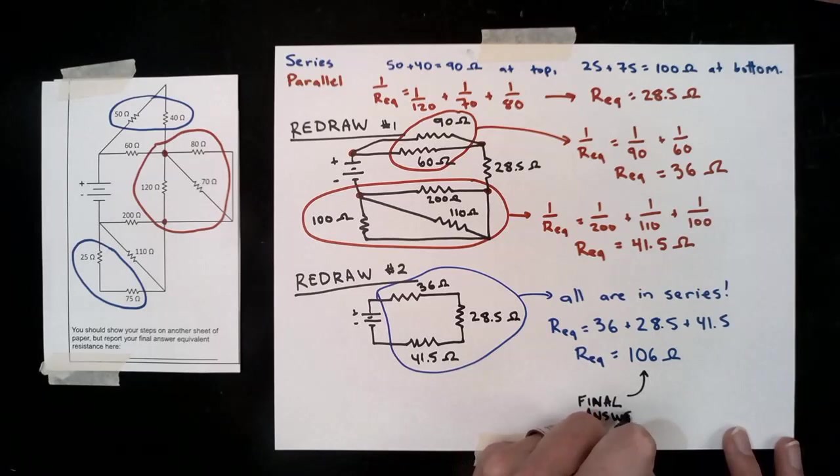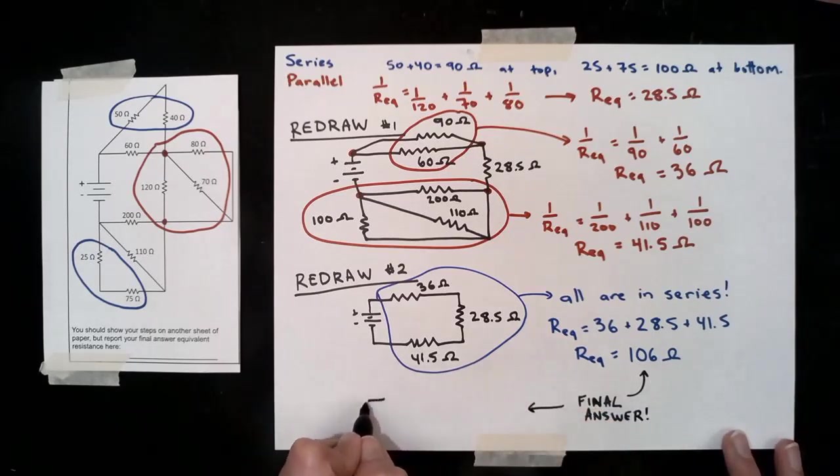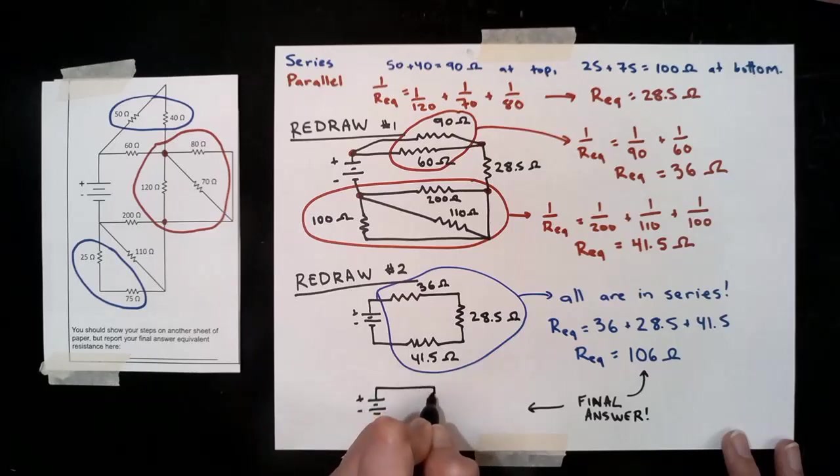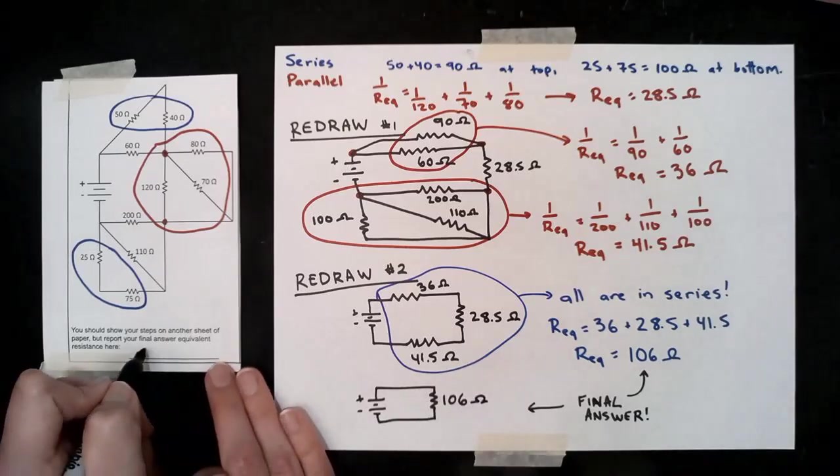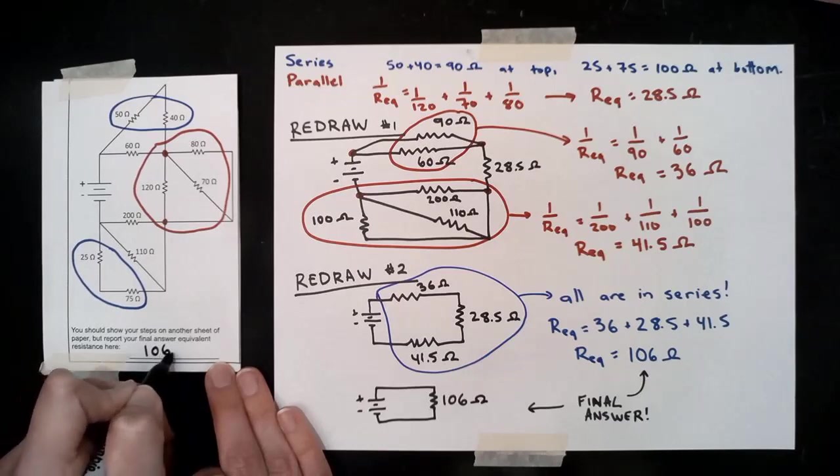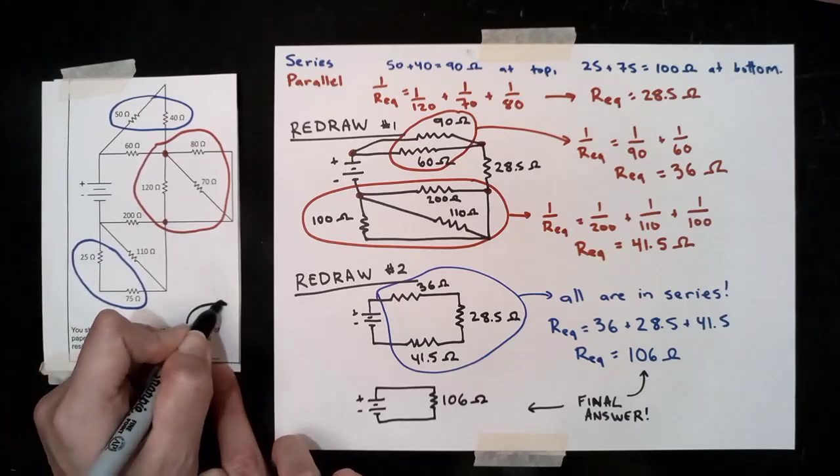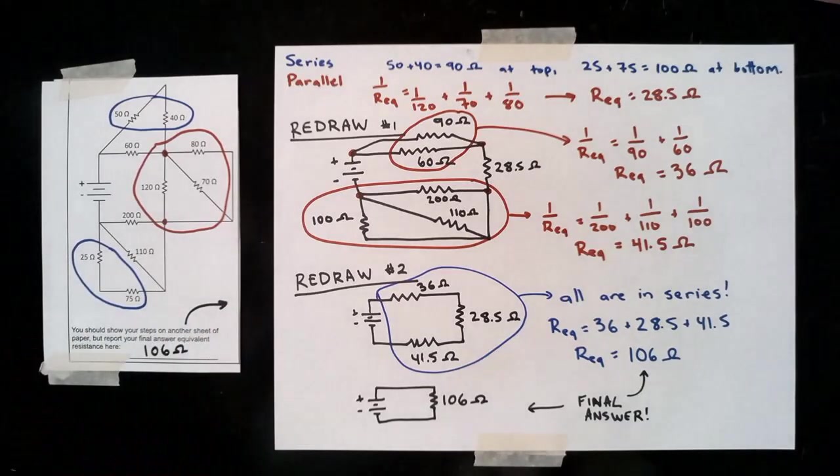What that looks like in a circuit is that we have the battery seeing a total resistance for the whole complex circuit we started with on the left of 106 ohms. So that is our final answer. You don't have to redraw it, I just want to make sure that we see what that looks like. You're welcome to pause the video, make sure that you've got all the notes you want to take, and again you can always rewatch and pause as you go.